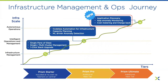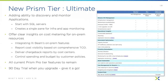Looking at the infrastructure management and operations journey, we have flavors of Prism Central: Prism Starter, Prism Pro, and Prism Ultimate. We're introducing new features under the Prism Ultimate tier: application delivery, app anomaly monitoring, cost metering, and chargeback. This integrates Beam features into Prism Ultimate, allowing you to continuously report cost visibility, deliver chargeback reports, and track cost centers. All current Prism Pro tier features remain within the license, and there's a 90-day trial when you upgrade.